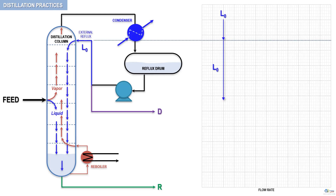Notice that I said almost a constant flow rate. Why is that? Because due to the intimate scrubbing inside the distilling column, some of the lightest components in the falling liquids may vaporize, and some of the heaviest components in the vapors may condense. This will undoubtedly affect the overall liquid flow. For the sake of demonstration, we will assume that these changes are negligible.